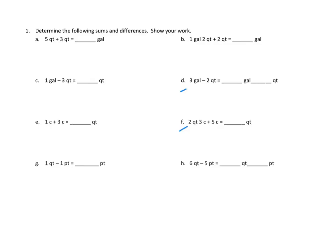Okay, let's take a look at number one. Problem number one asks us to determine the following sums and differences and to show your work. I'm going to do two problems here on number one. One of the problems we've got here is D, which is a subtraction problem. We've got three gallons, and we have to subtract two quarts, and of course those are unlike units.